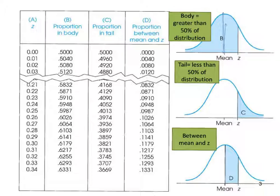The tail, identified by column C, is less than 50% of the distribution. That area in the tail is quite a bit smaller than the area in the body. For example, if we look at z = 0.24 and look at the proportion in the tail, that proportion equals 0.4052. Overall, the proportion in the tail is going to be smaller than the proportion in the body.